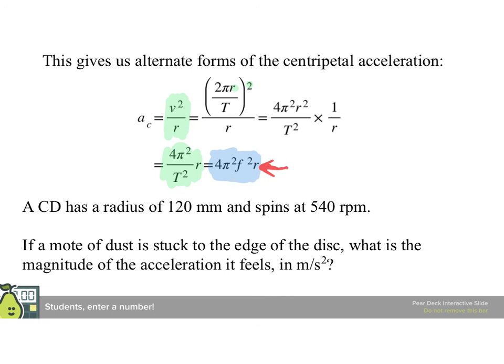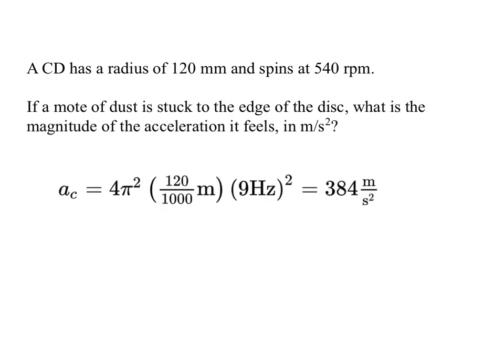So as an example, if a mote of dust is stuck to the edge of the disc, what is the magnitude of the acceleration that it feels in meters per second squared? What acceleration would you have to impart? And we just grind out the numbers, and we find the acceleration would be 4 pi squared times r times f squared.